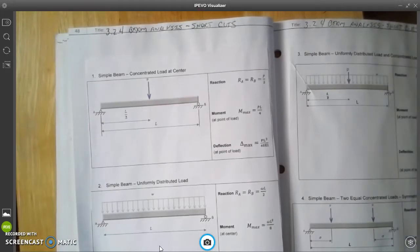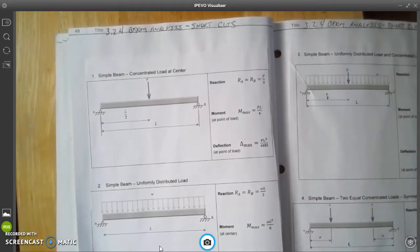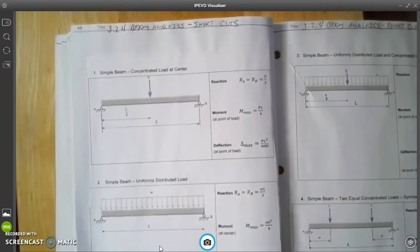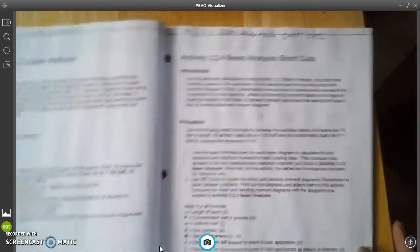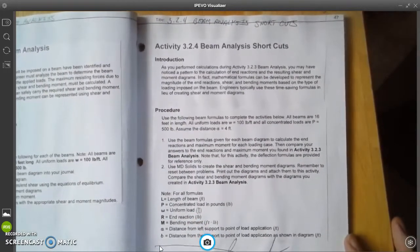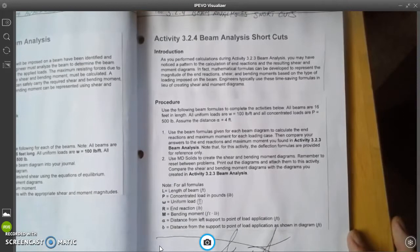So you're going to see some shortcuts. We're going to do two different kinds of shortcuts, and this first one, this is the first of the two different types of shortcuts. So here we go: Activity 3.2.4 Beam Analysis Shortcuts.